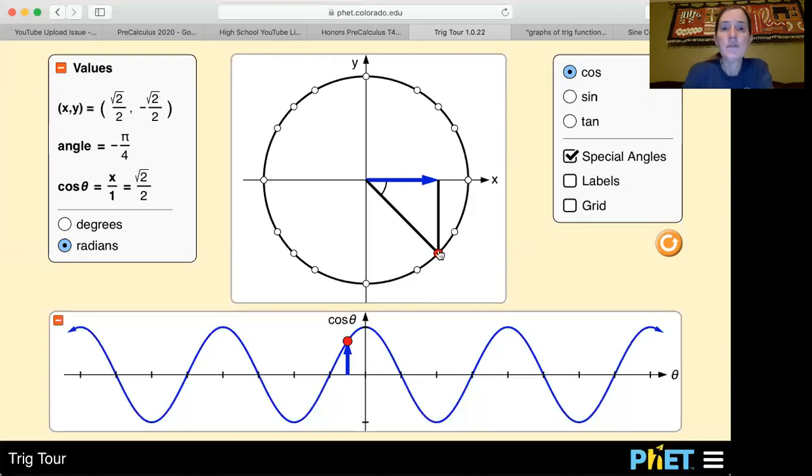And then if you remember how we use special triangles with our special angles to find those cosine and sine values. So I'm going to put the angle at pi over 6 and I'm going to change it to degrees and so pi over 6 is 30 degrees.